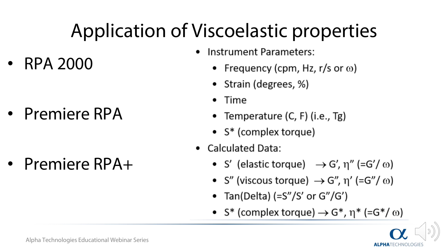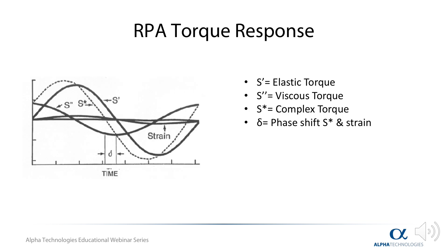The lineup of RPAs offered by Alpha Technology are capable of doing just this, ranging from the original RPA 2000 all the way to the Premier RPA Plus, which uses a dynamic shape factor to provide the most accurate modulus measurement in the industry.